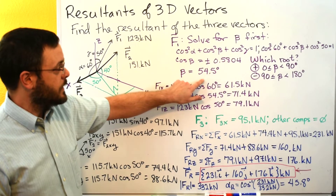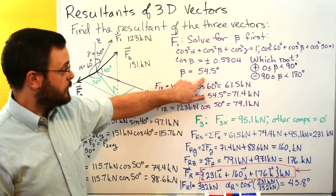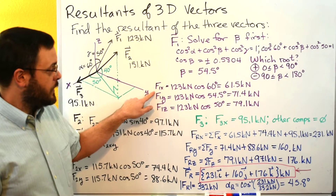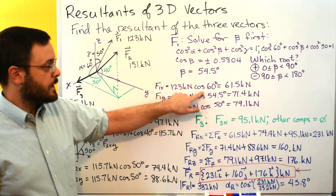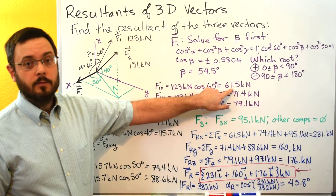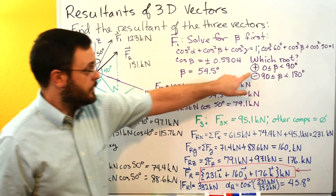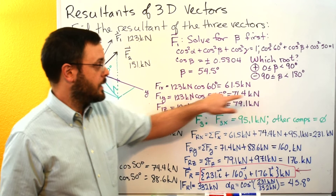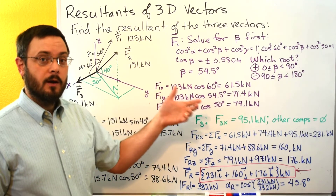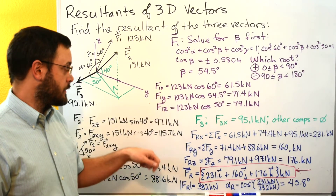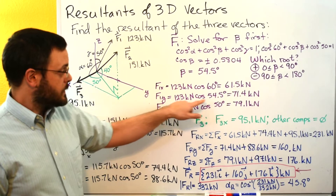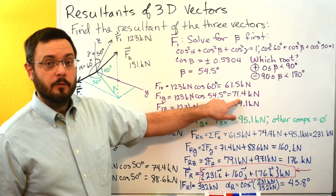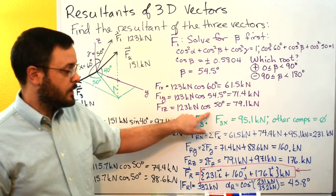From here we just plug into the formulas for coordinate direction angles. F1x equals the magnitude of F1 times cosine of alpha — plugging in 60 gives us 61.5 kilonewtons. If the angle is between 0 and 90 degrees we get a positive component; between 90 and 180 we get negative. For F1y, magnitude times cosine of beta (54.5) gives 71.4 kilonewtons. For F1z, magnitude times cosine of gamma (50) gives 79.1 kilonewtons.